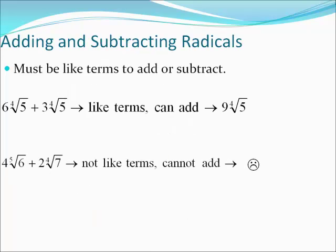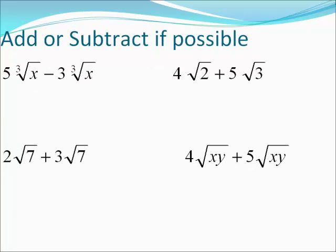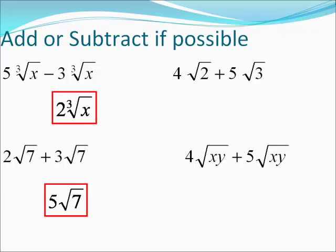When you're adding and subtracting with radicals, you must have like terms to be able to add and subtract them. Six fourth roots of five added to three fourth roots of five — we can add these: six plus three is nine, so nine fourth roots of five. Four fifth roots of six plus two fourth roots of seven — the roots are not the same and the number inside the radical is not the same, so we cannot add these. Five cube roots of x minus three cube roots of x — they're both cube root of x, so five minus three is two cube roots of x. Two plus three is five, so five square roots of seven is correct.